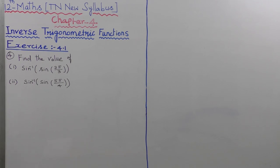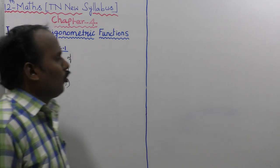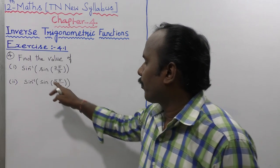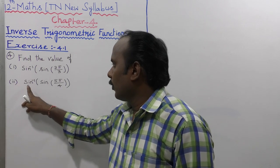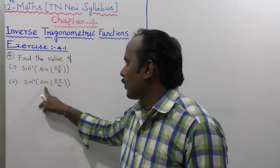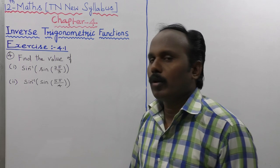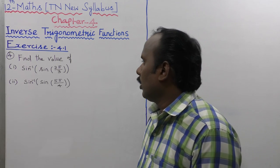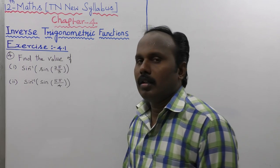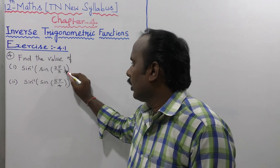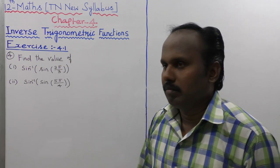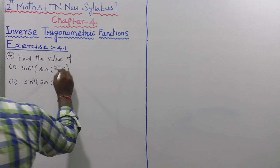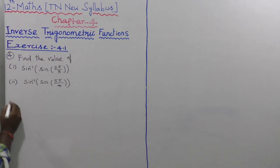Exercise 4.1. We need to find the value of sine inverse of sine of 2π/3 for the first part, and sine inverse of sine of 5π/4 for the second part. For the first one, we check if 2π/3 belongs to the closed interval [-π/2, π/2] — it does not, so we cannot directly apply the formula.